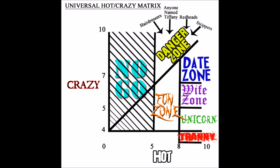Now, below 5 crazy and above an 8 hot, this is your unicorn zone. These things don't exist. If you find a unicorn, please capture it safely. Keep it alive. We'd like to study it and maybe look at how to replicate that.